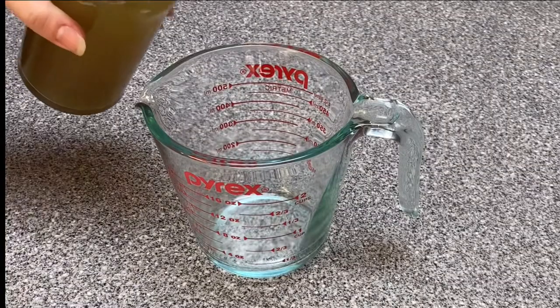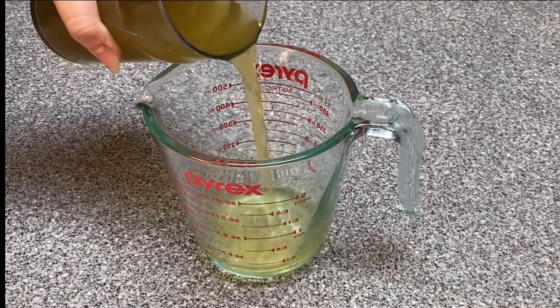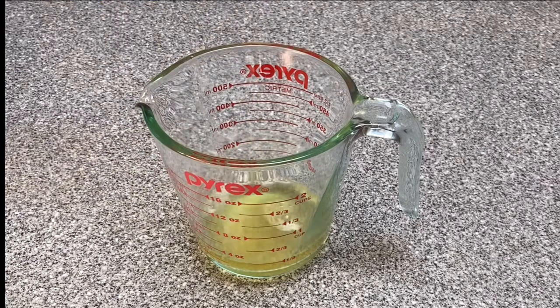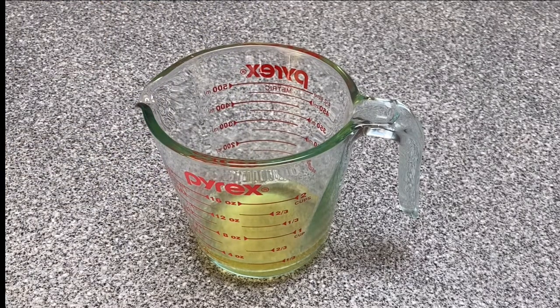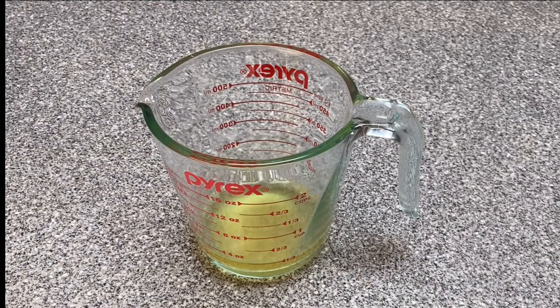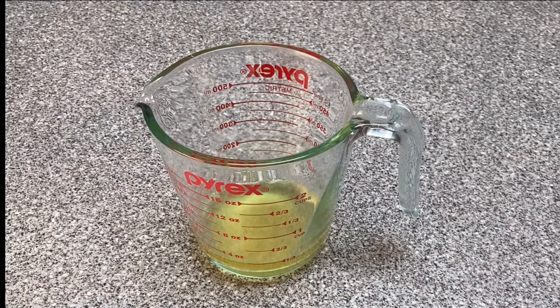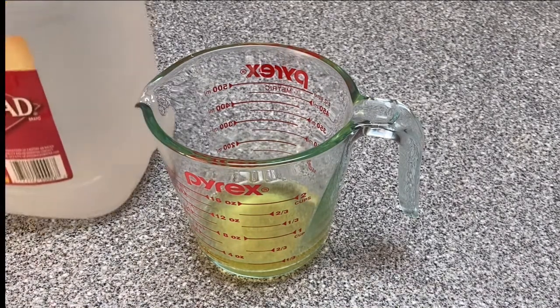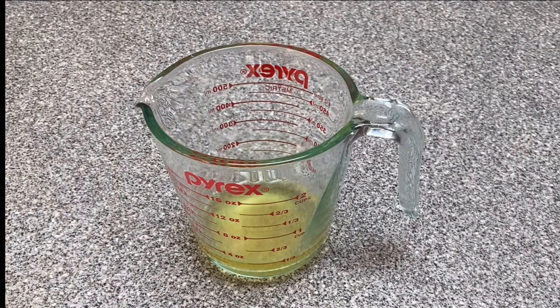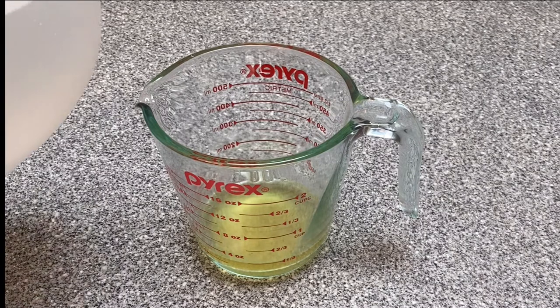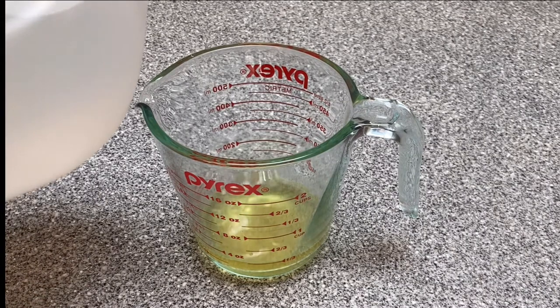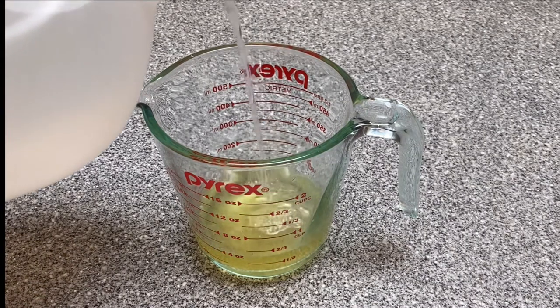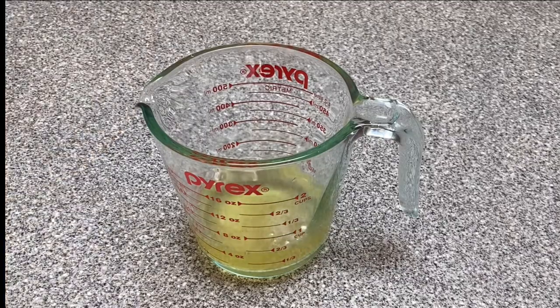The recipe I used called for a fourth cup of green tea and a fourth cup of purified water, which now that I think about it, makes no sense, because I boiled down my green tea. I think you would be fine if you just used a half cup of green tea. But I was just following the recipe, so here is a fourth cup of green tea and a fourth cup of purified water.